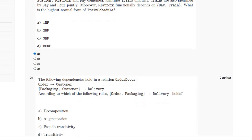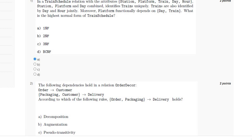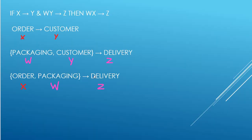For the second question, we have been given the following functional dependencies and we have to identify which rule the dependency holds according to. It is pseudo-transitivity. According to Armstrong's axiom rule of pseudo-transitivity, if Y is dependent on X, and Z is dependent on W and Y, then Z will be dependent on W and X.